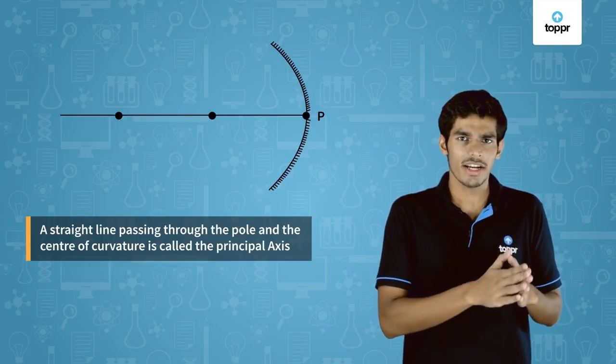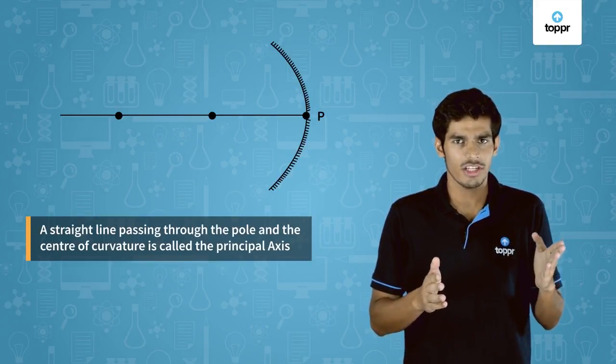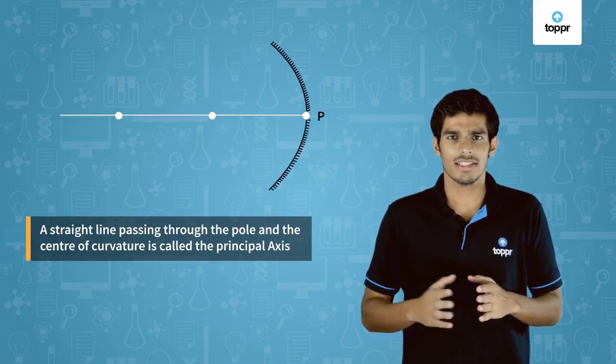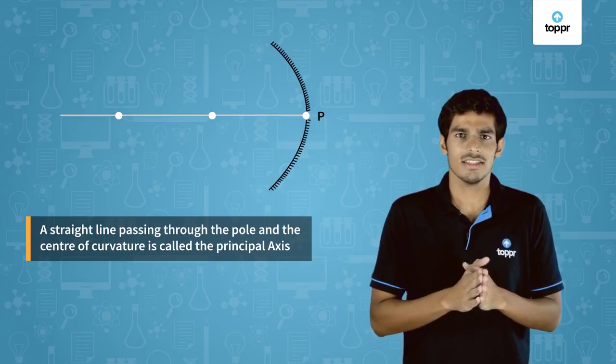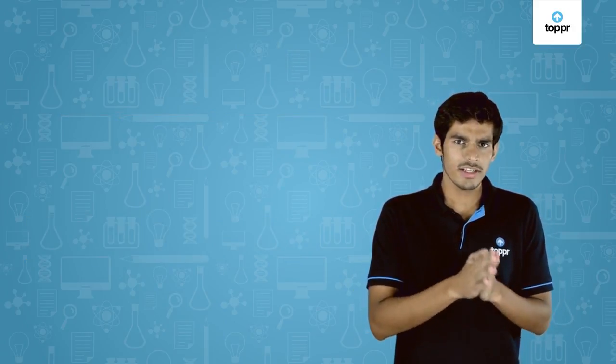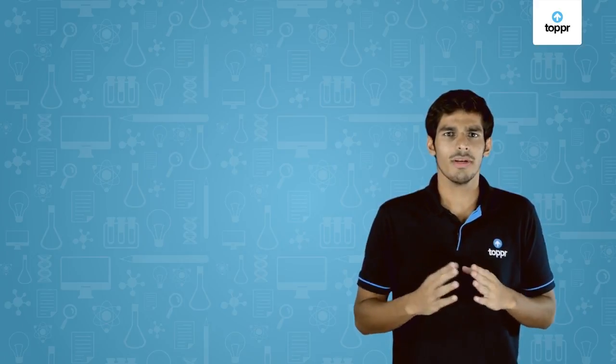If I imagine a straight line passing from the center of curvature and the pole, the line I get is called the principal axis. The principal axis is the normal to the mirror at its pole. Once we are clear with these terms, let us perform an activity.